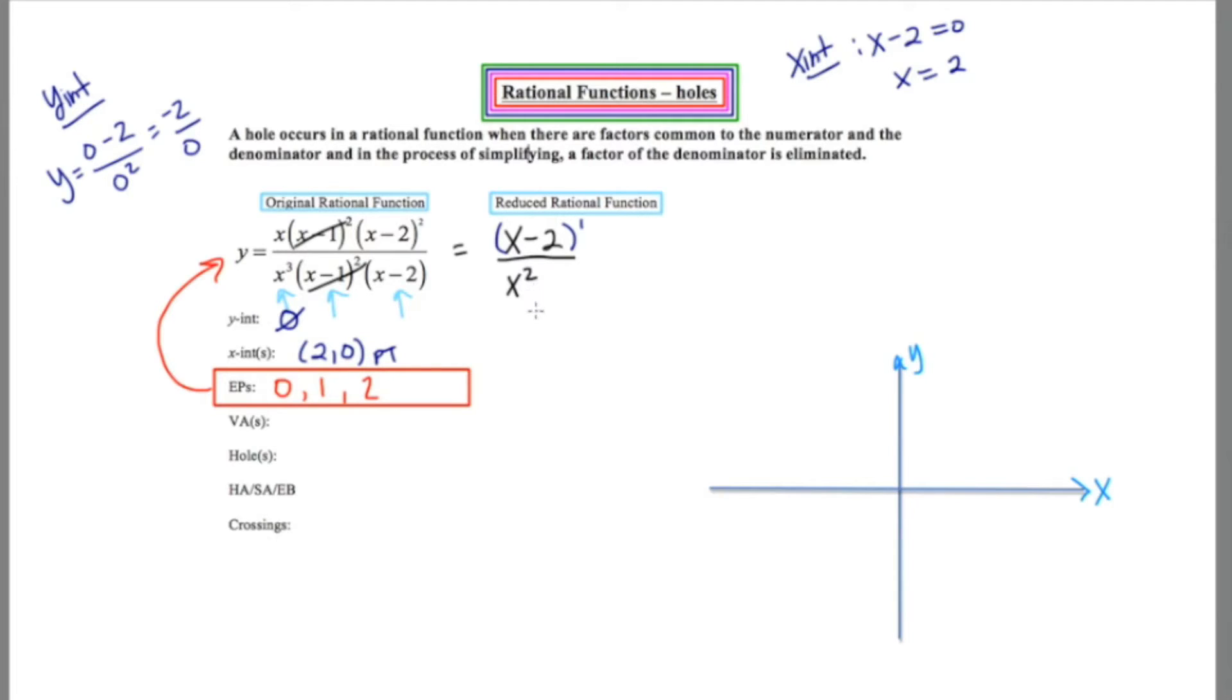Now, looking at this reduced rational function, I can tell there's going to be a VA, and the VA is going to be at x equals zero. Remember, equations are best, not just a number. Don't just say zero. Say x equals zero. And because the power is even, we know that's going to be a stay. So I'm going to put a little subscript s.